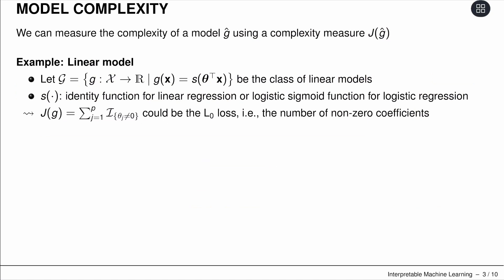Let's talk about G hat and complexity measures. We could use a linear model. Linear model simply means theta transpose times input vector x, and then applying some transformation S on that. S could be the identity function for linear regression, or the logistic sigmoid function for logistic regression.